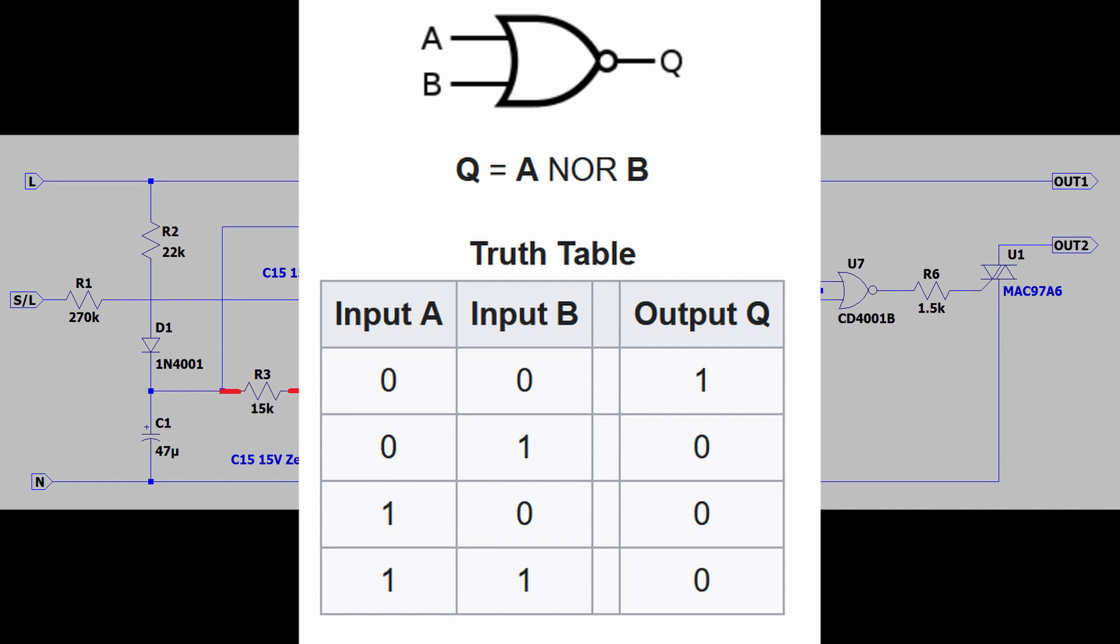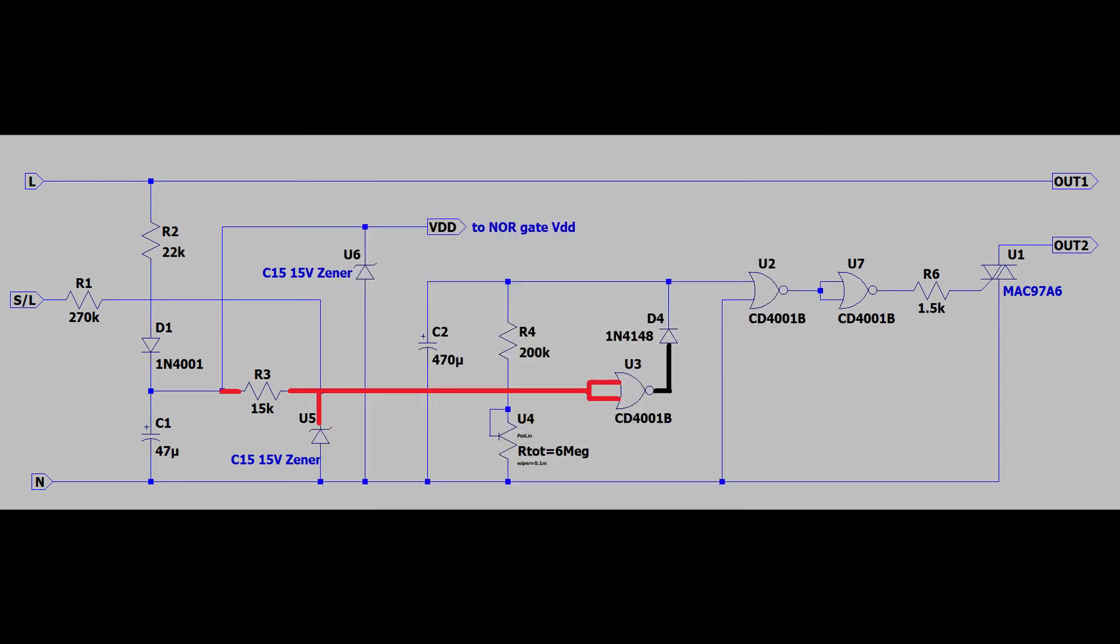I might make a video about this later. Let me know down in the comments if you'd find this helpful. Since both the inputs are connected here, it simply means both inputs will be the same, and the NOR gate is actually being used as a NOT gate, or an inverting gate, where the output will be the opposite of the input. The 15V DC voltage on the input of the NOR gate is read as a high, meaning the output will be low, or 0V.